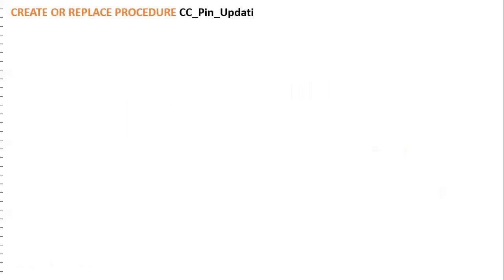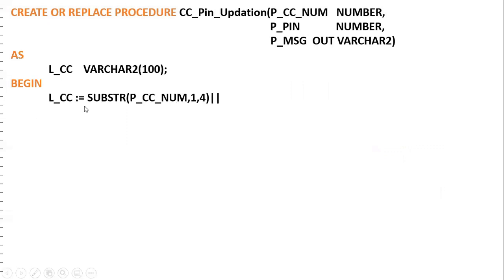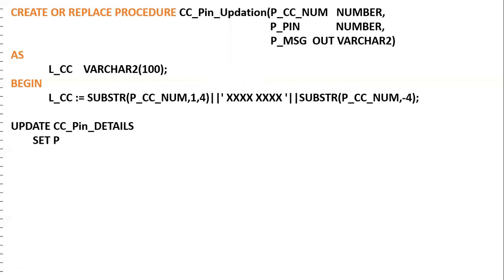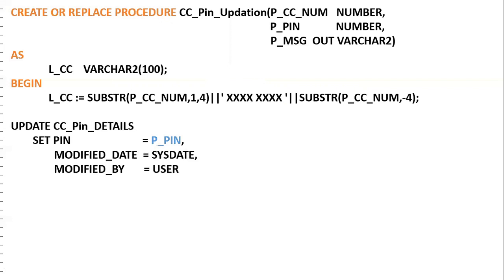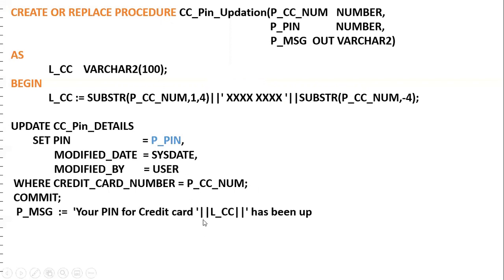I'm putting everything in a single window to make the code easier to understand. The procedure has two input parameters — credit card number and PIN — and one output parameter for the message. A local variable LCC is declared for the masking concept. The UPDATE statement sets p_pin, modified_date to SYSDATE, and modified_by to USER. The pipe symbol is used to concatenate the output message strings, where LCC represents the masked card number.